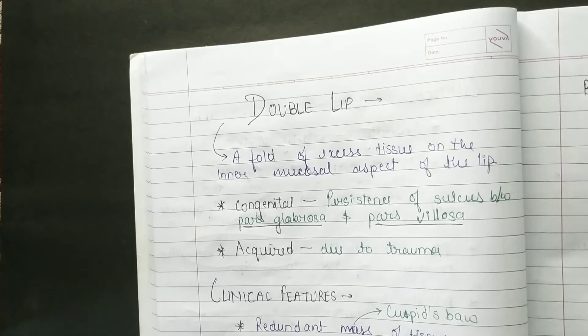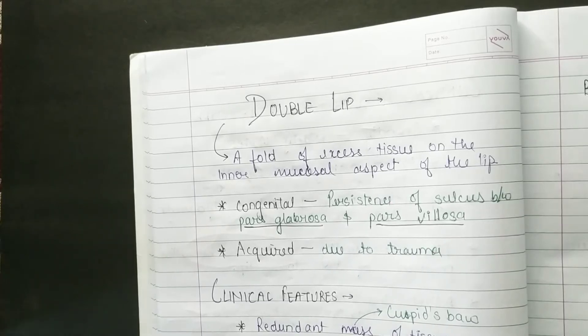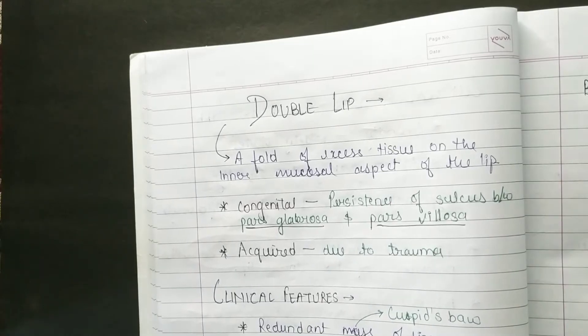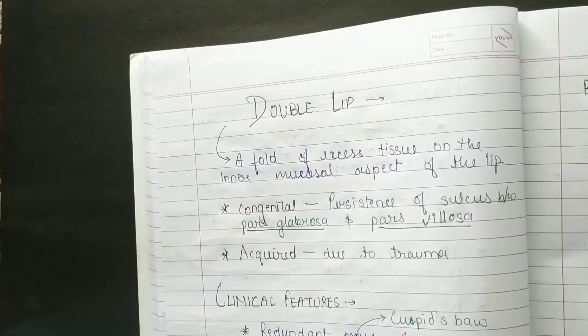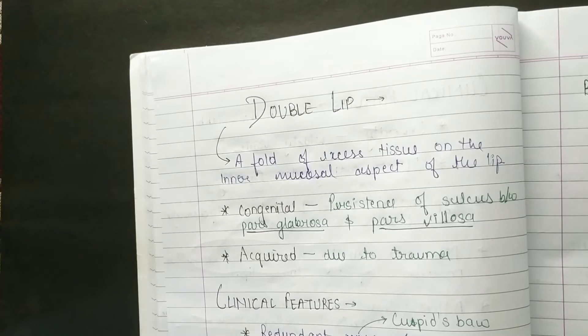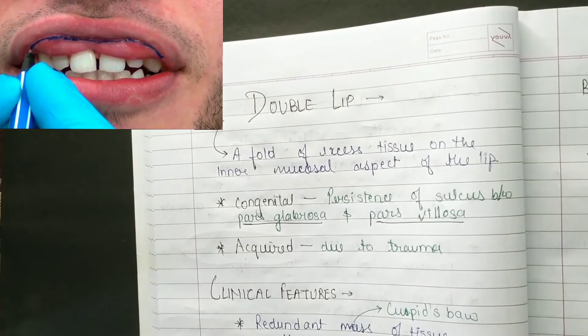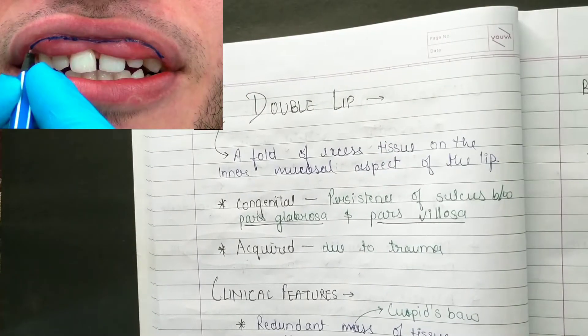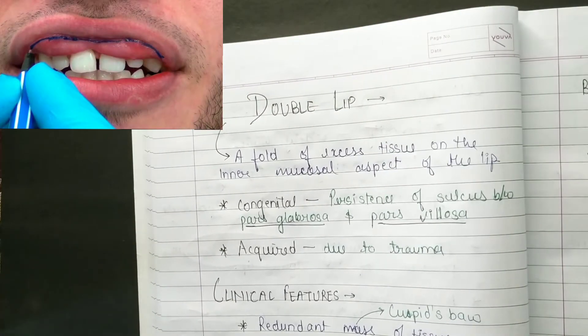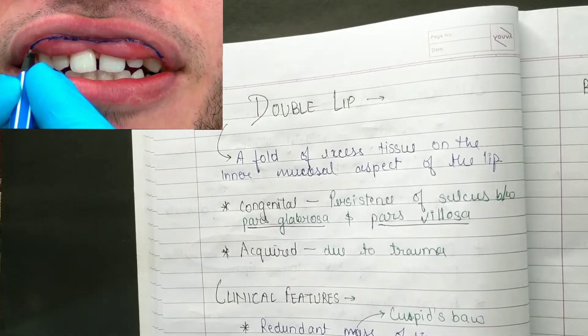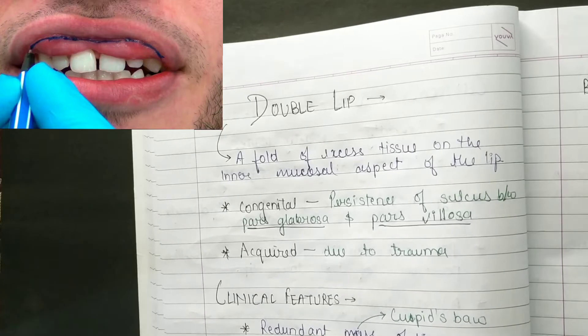Hello everyone, welcome to SAM — Study Art Motivation and Education. In this video we are going to discuss another anomaly of developmental disorders, or disturbances of lip and palate: double lip. What is this?